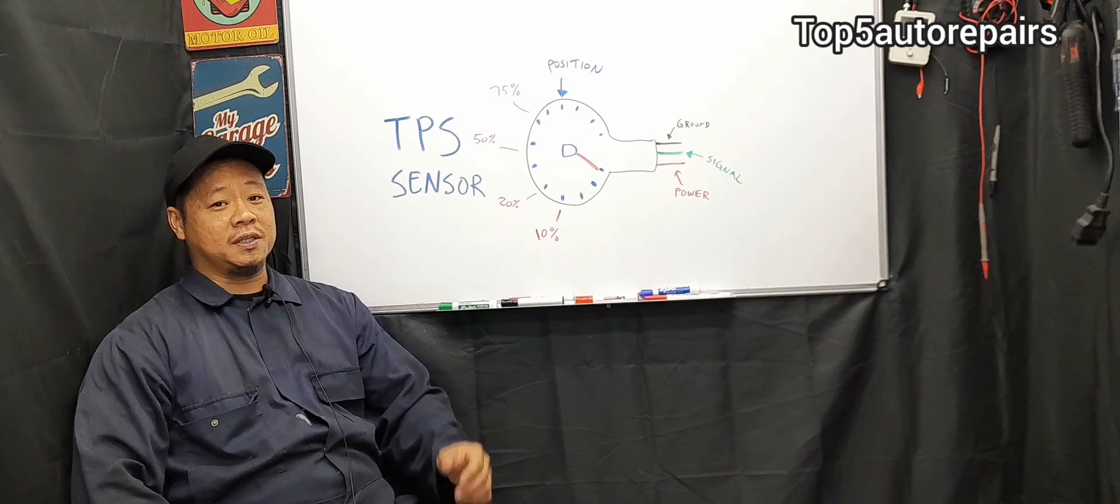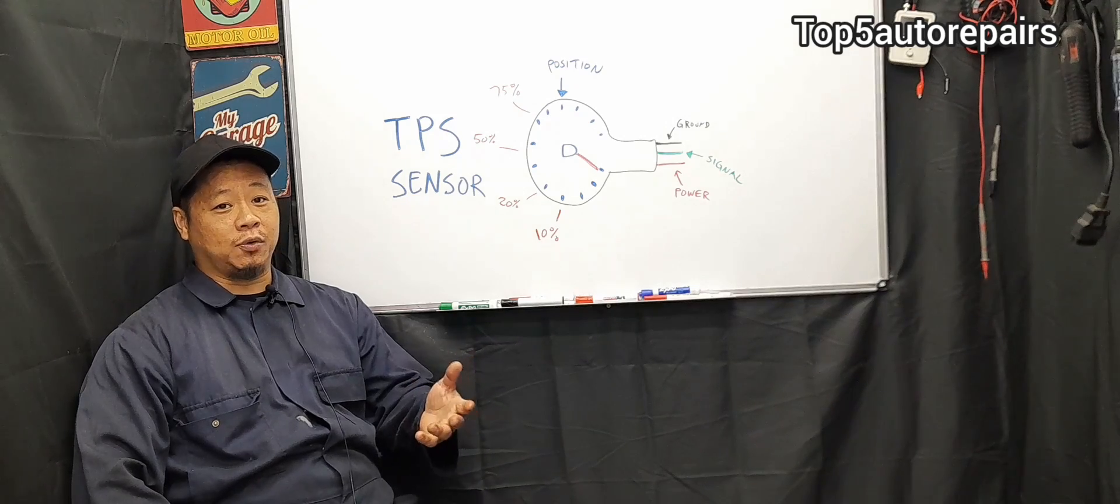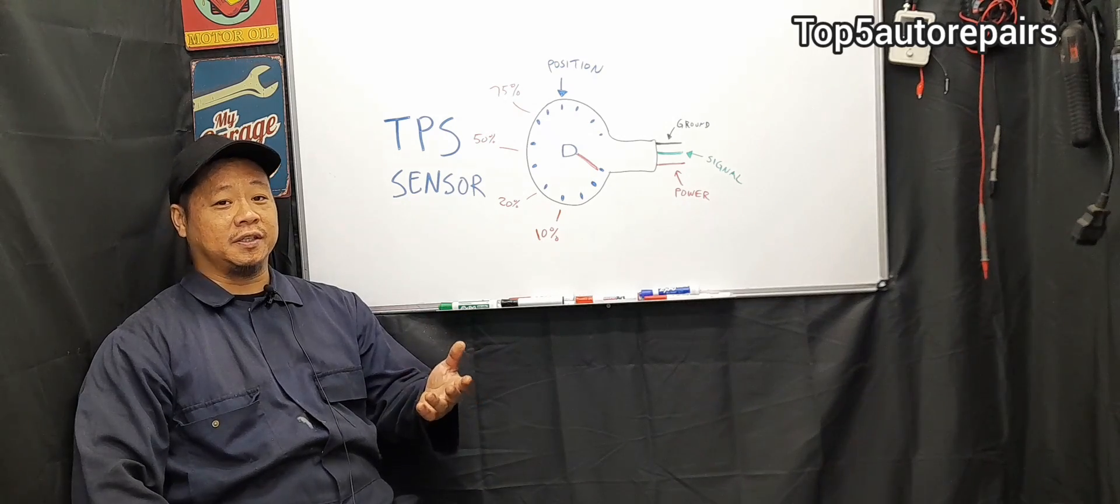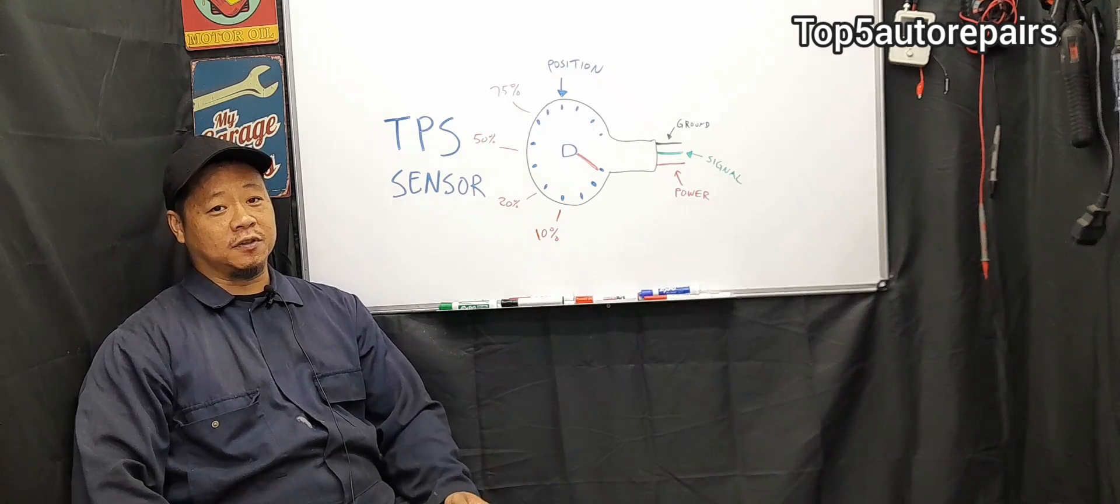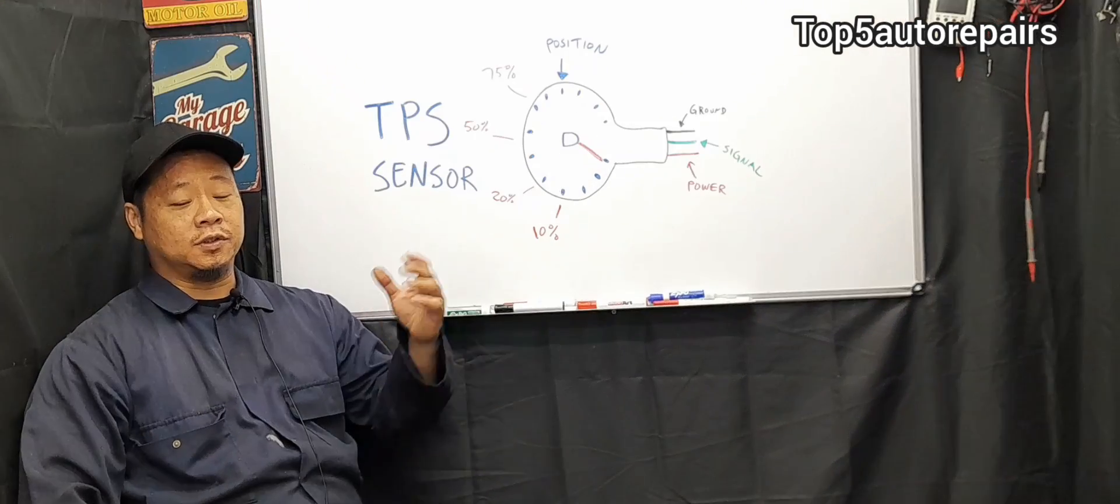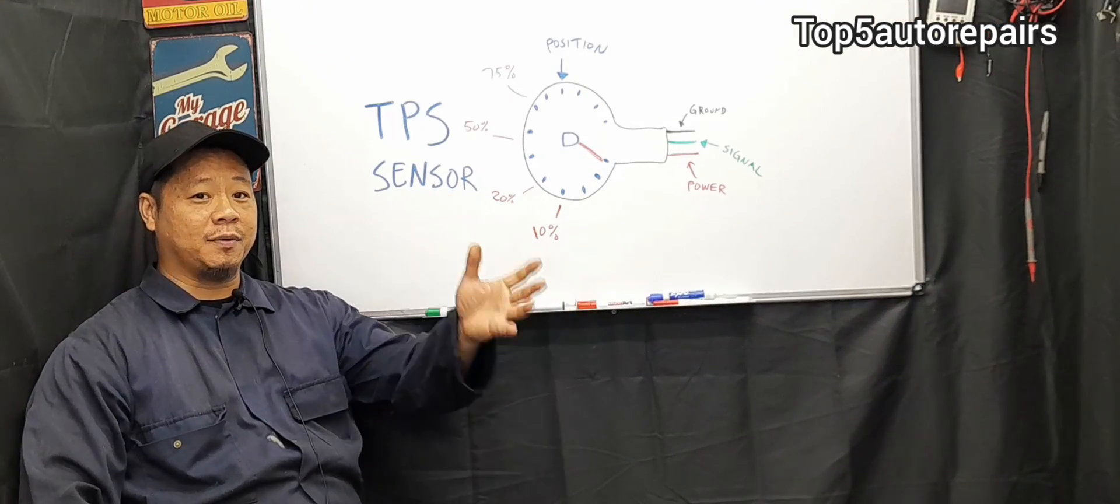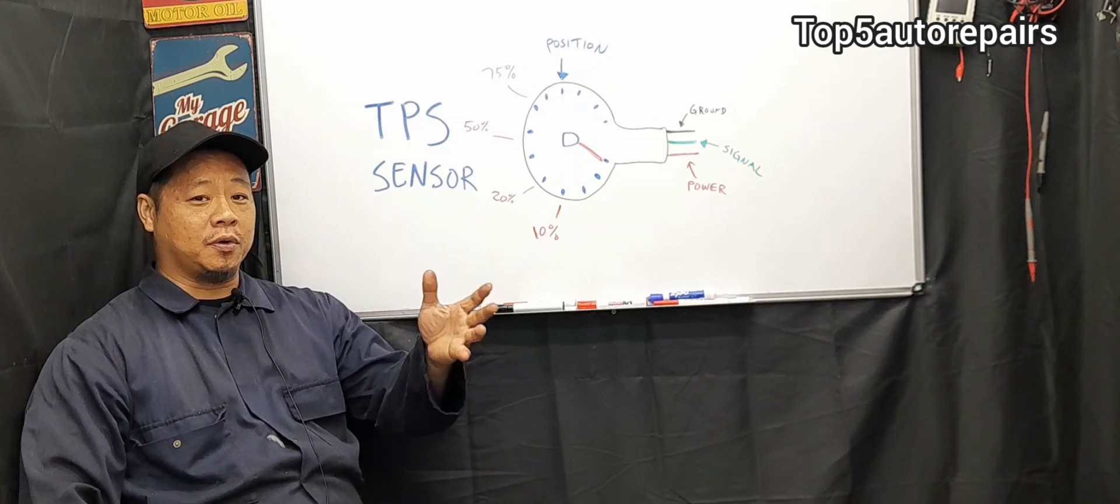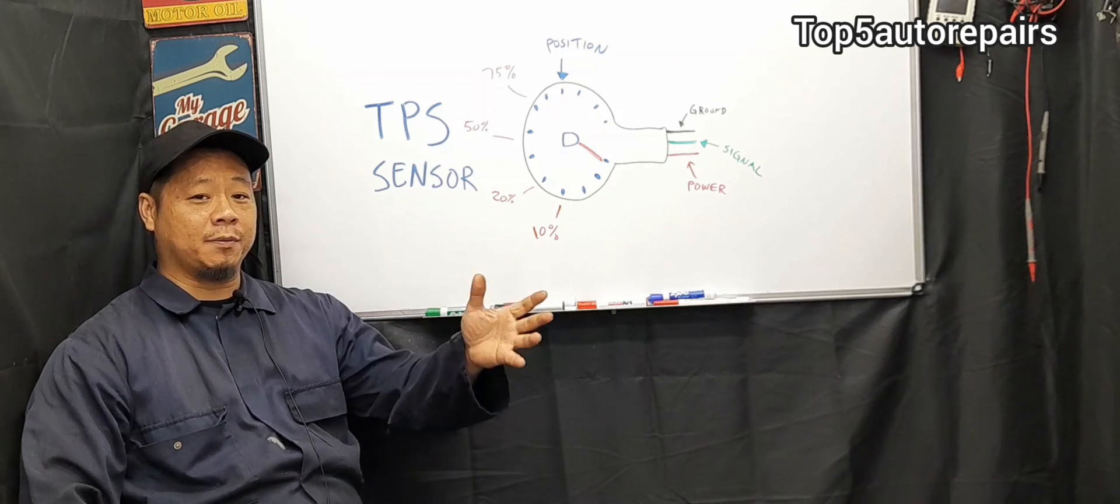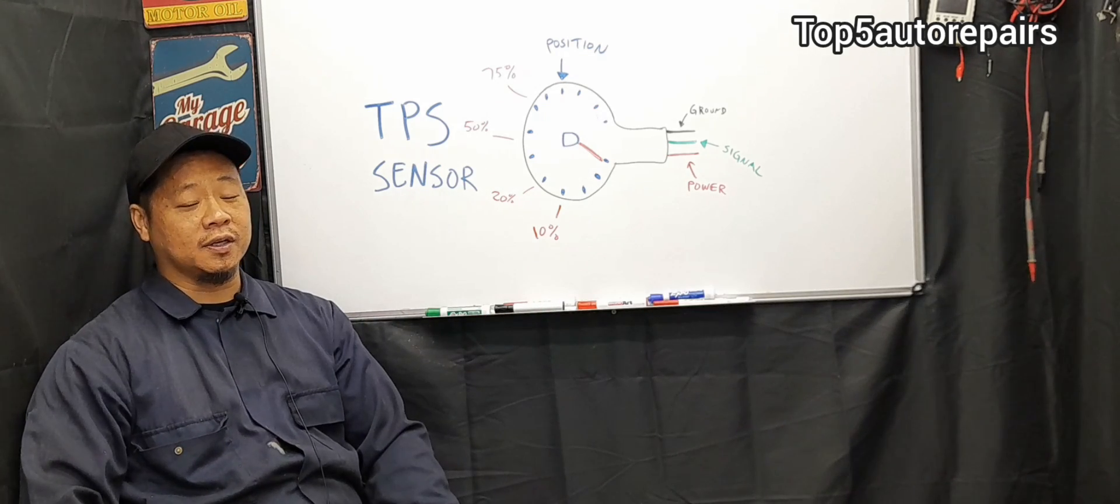Since the TPS is an input sensor, it also works together with other input sensors such as the intake air temperature sensor, mass airflow sensor, and so on. Together, these input sensors will send information to the computer, and the computer will use this information to determine how much fuel should be sprayed into the engine.